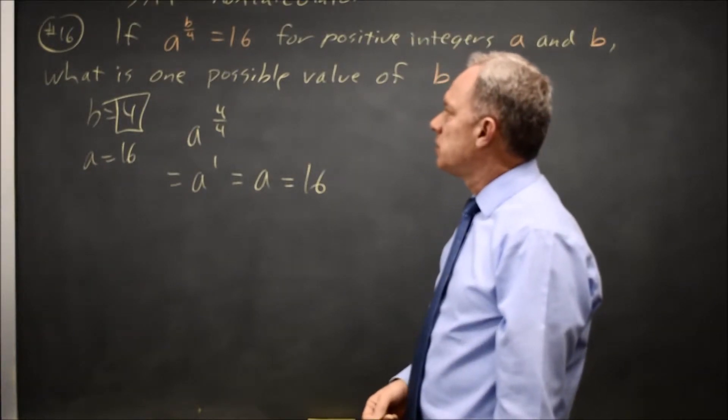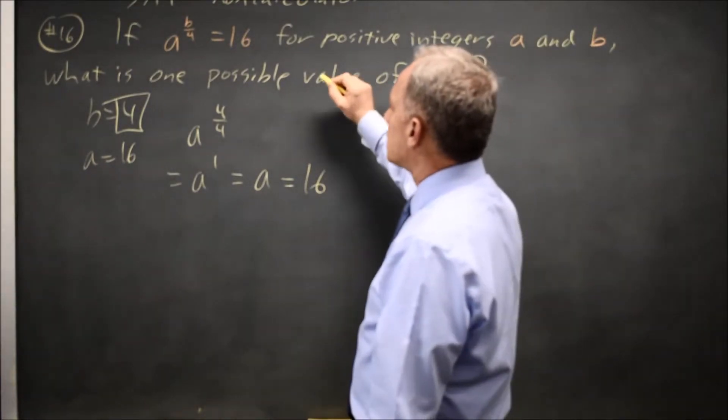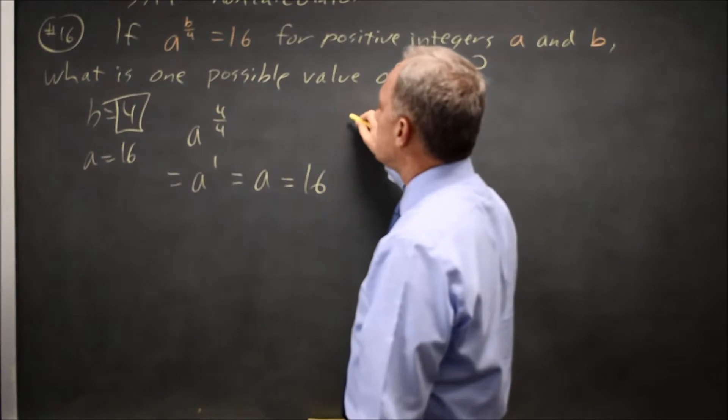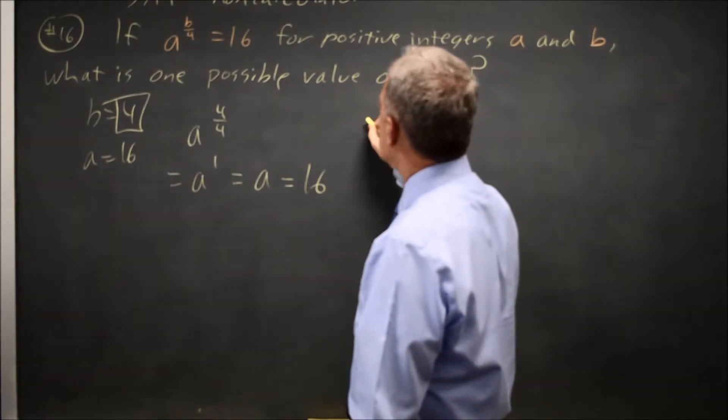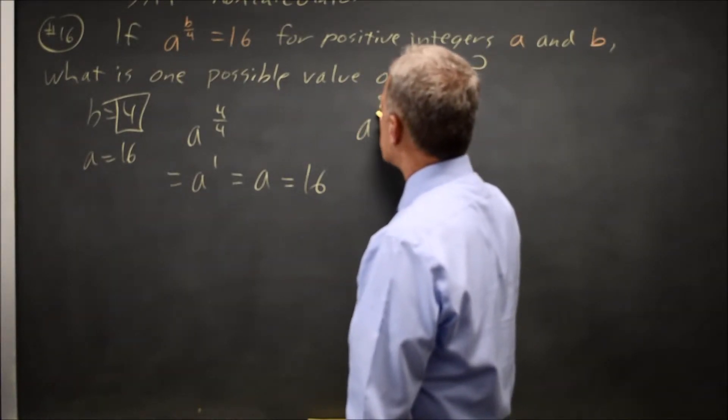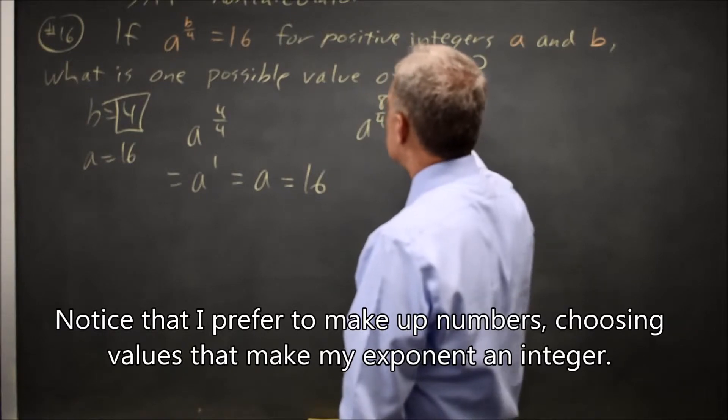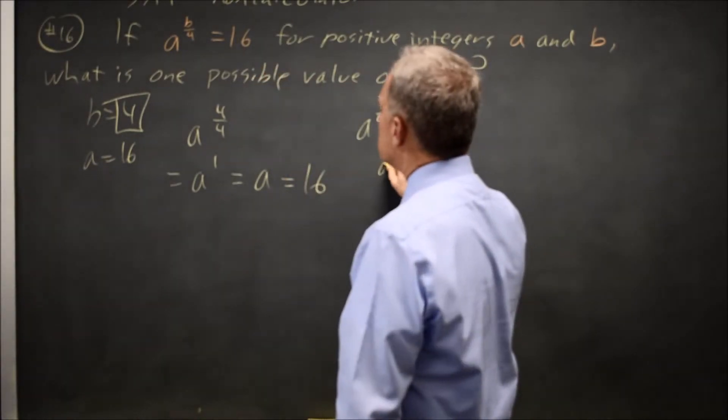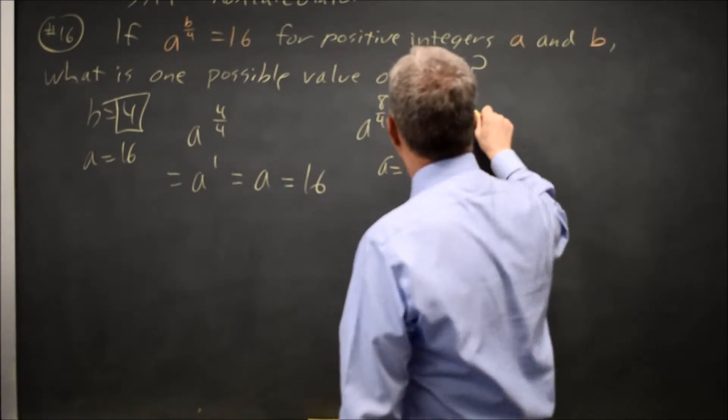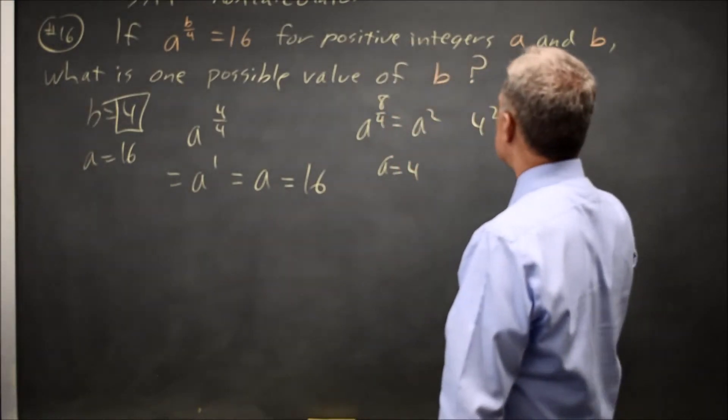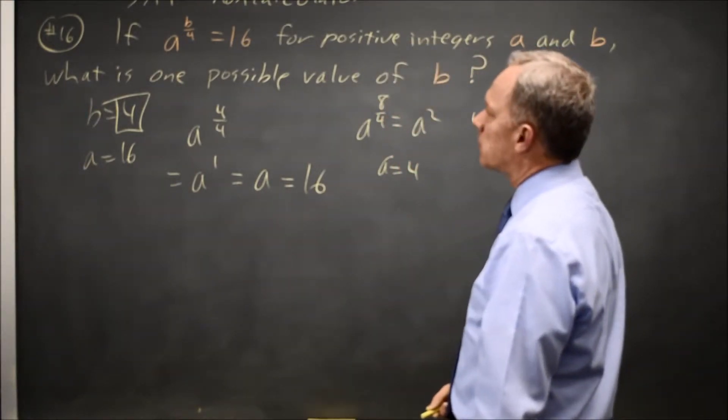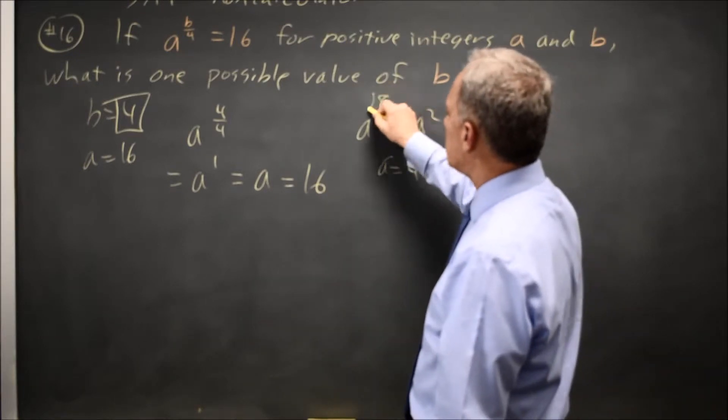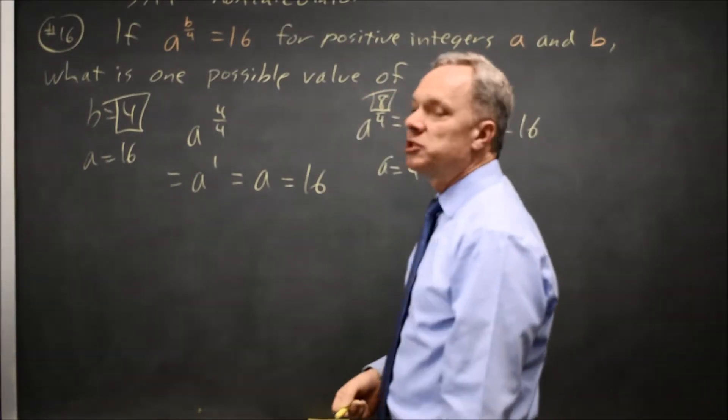Alternatively, I could have said, well, if b is 8, then a to the 8 over 4 is a squared. Because 16 is a perfect square, a equals 4 and 4 squared equals 16. That does work. They're asking for b, the numerator in the exponent, so I would choose 8.